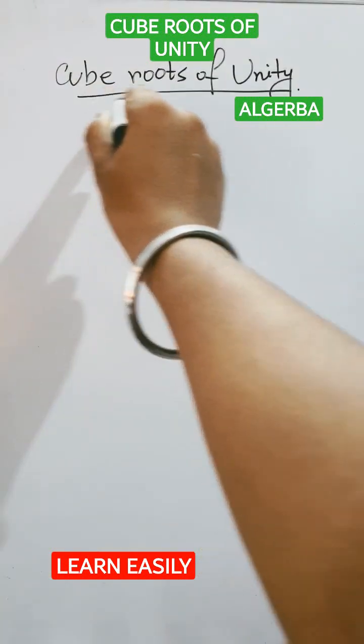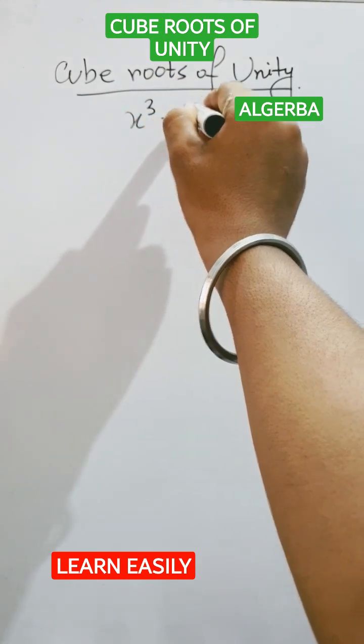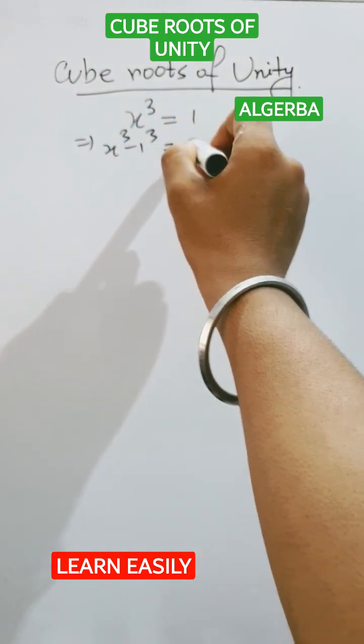Hello guys, welcome to Mr. Ronko Shorts. Today our topic is cube roots of unity. So first, take the required equation, that is x³ = 1. We will first factorize this, that is x³ - 1³ equals 0.